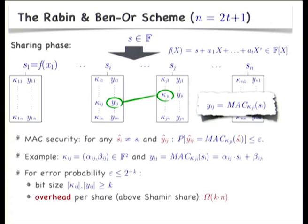The security of the MAC guarantees that an incorrect share S_i will not be consistent with the authentication keys except with small probability epsilon. There are different choices for such message authentication codes. Common to all of them: if you want an error probability of 2 to the minus k, then the size of the tags and keys must be at least k bits. Because every share comes along with n keys and tags, and every key and tag consists of k bits, we get this overhead of order k times n.